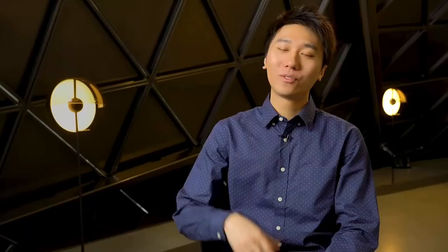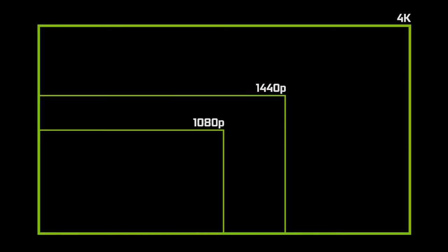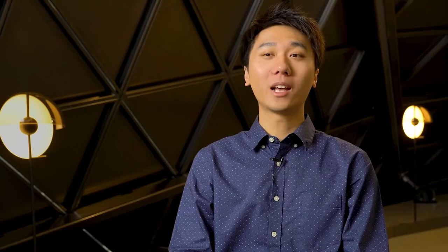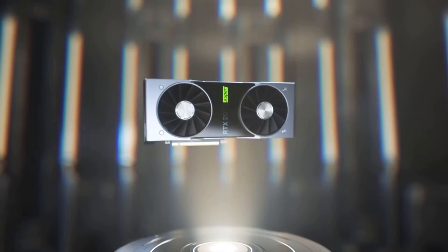There are places where DLSS looks even better than native resolution rendering. We've also drastically increased the maximum upscaling ratio — you can now render an image at 1080p and DLSS will generate a beautiful looking 4K image for you. In addition, we've made the neural network run twice as fast by utilizing the Tensor Cores more efficiently, so you can now use DLSS across all RTX GPUs and all resolutions.